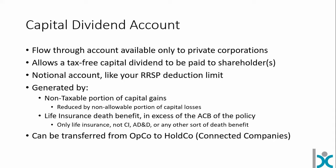Either you've had a capital gain at some point, or a life insurance policy that paid a benefit into the corporation — and that's only the benefit in excess of the ACB of that policy. Life insurance is the only way to do this: not critical illness insurance, not CI with return of premium, not accidental death and dismemberment. Only a life insurance policy where the benefit pays into the corporation. Using the connected companies rules, we can actually transfer a CDA credit from OpCo to HoldCo.